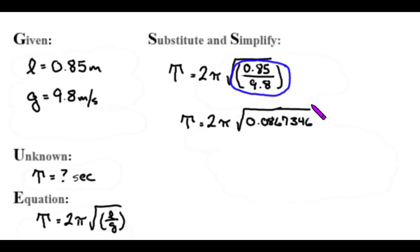Next, I can do this math, and I get the period equals 2 pi times the quantity 0.294507.